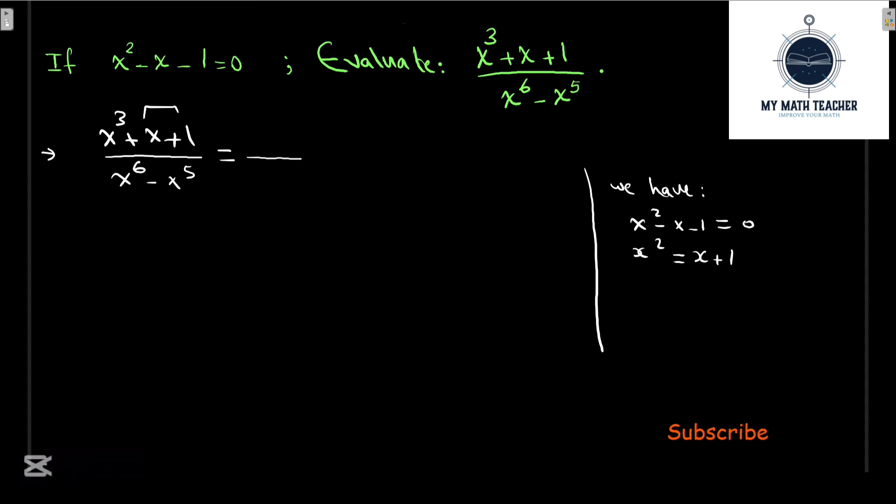We replace x + 1 by x², so we get x³ + x² in the numerator. In the denominator, we factor out x⁵ to get x⁵(x - 1). In the numerator, we factor out x² to get x²(x + 1) over x⁵(x - 1).